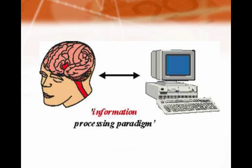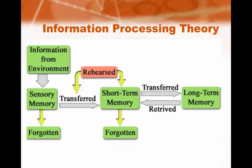In the bigger picture, information processing theory is much like computer information processing — it receives input, processes the information, and creates new information in the form of output. So the first step in information processing theory is to receive environmental information through sensory memory.